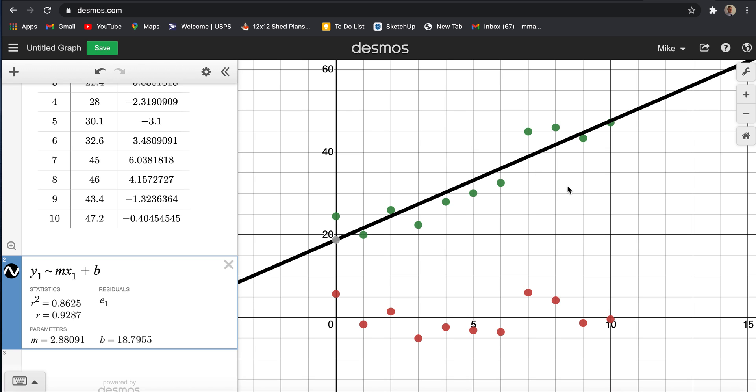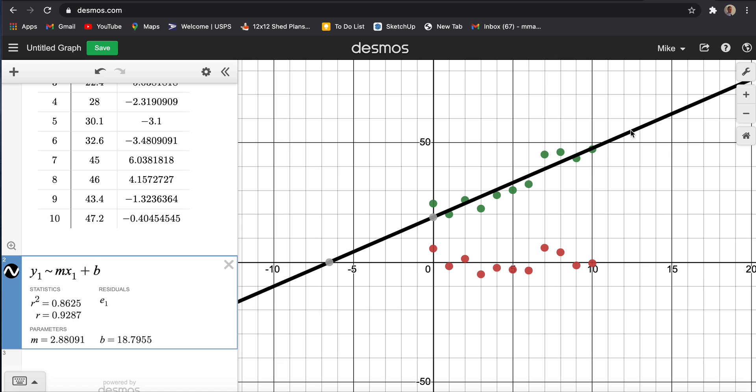Now, if we wanted to make a prediction outside of our collected data range, let's say this point out here. Because this is occurring outside our data range, we call this an extrapolation.